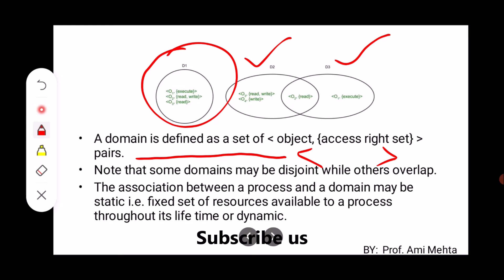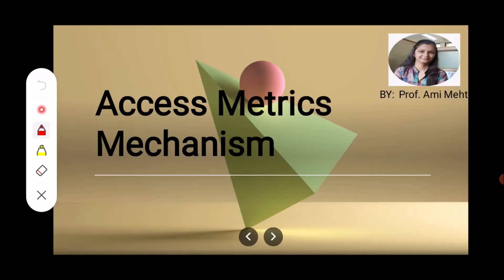The association between a process and a domain may be static — meaning it affects the set of resources available to a process throughout its lifetime — or it may be dynamic. This is how a domain is defined. Now let us discuss how we can use this domain and what the access matrix mechanism is.